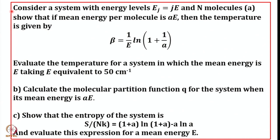Now let us discuss a relevant numerical problem. Consider a system with energy levels E_j = j·ε, and N molecules. Part A: show that if the mean energy per molecule is Aε, then the temperature is given by β = (1/ε) ln(1 + 1/A). Let us try to solve this step by step.